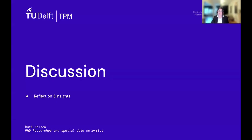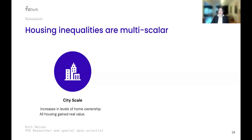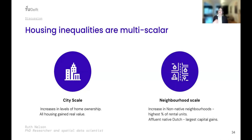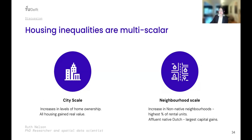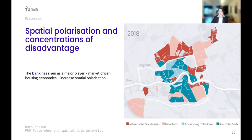Moving to the discussion with three key insights. First, housing inequalities are multi-scalar. While there have been increases in levels of home ownership and all housing has gained real value across trajectories, when we break this down at the neighborhood scale we see that non-native Dutch neighborhoods have grown in number, have the highest percentage of rental units, and the affluent native Dutch neighborhoods have had the largest capital gains. If we just looked at the city statistically, we'd say home ownership has increased — but breaking it down reveals where and who has benefited more.